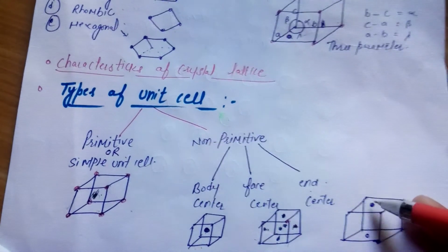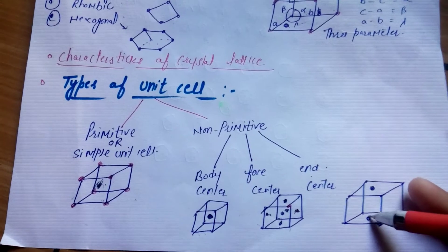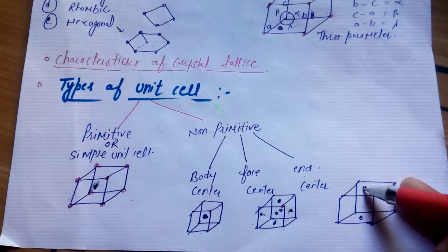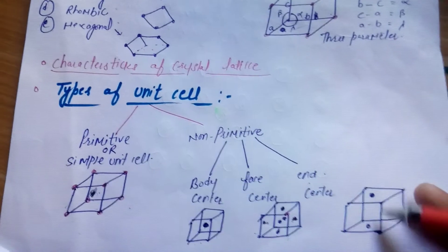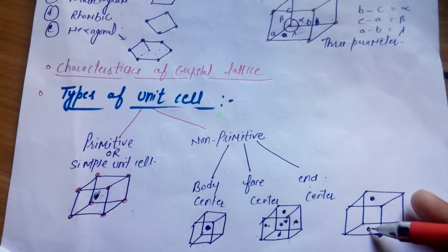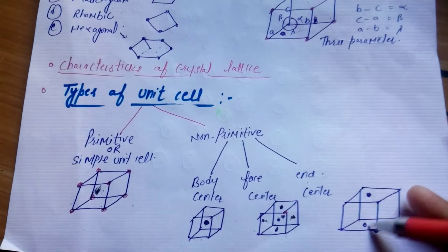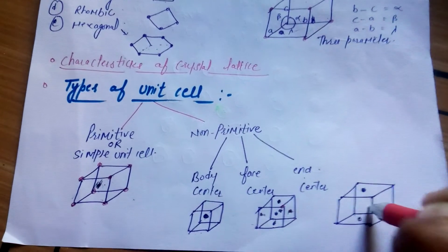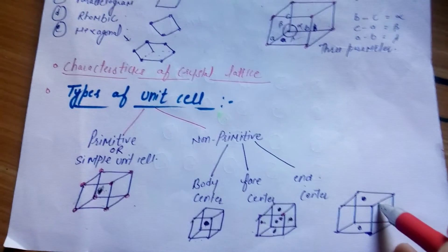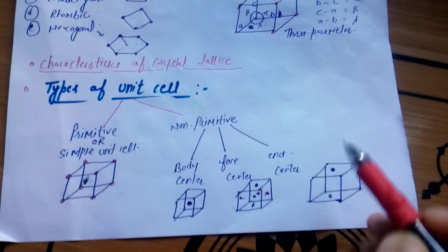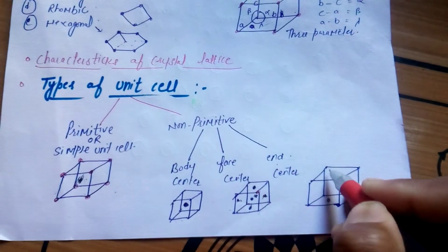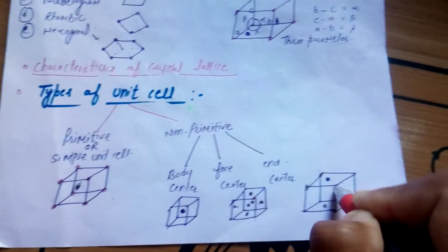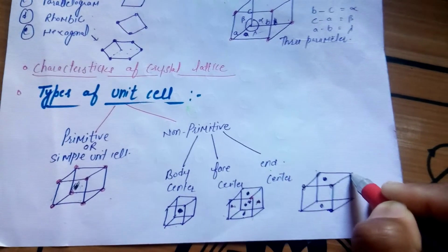The end center unit cell has two faces — the upper face and the lower face. If an atom is present at the center of these two faces, the upper and lower, it means that it is the end center unit cell. The arrangement is shown in the end center. You can see the 8 corners of each unit cell along with the end center arrangement.